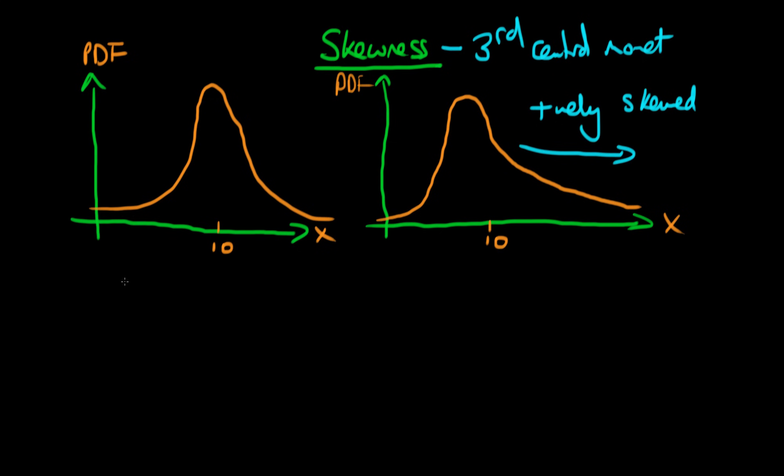So what could we calculate to represent this skewness? Well, it turns out we could calculate the expectation of (x minus the mean)³, which in this case is (x minus 10)³.